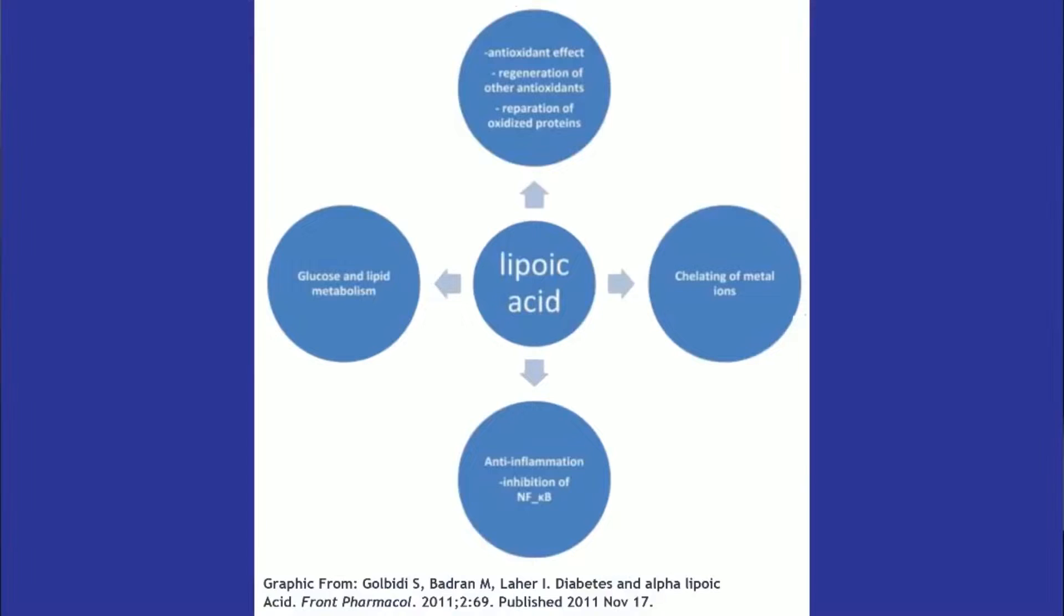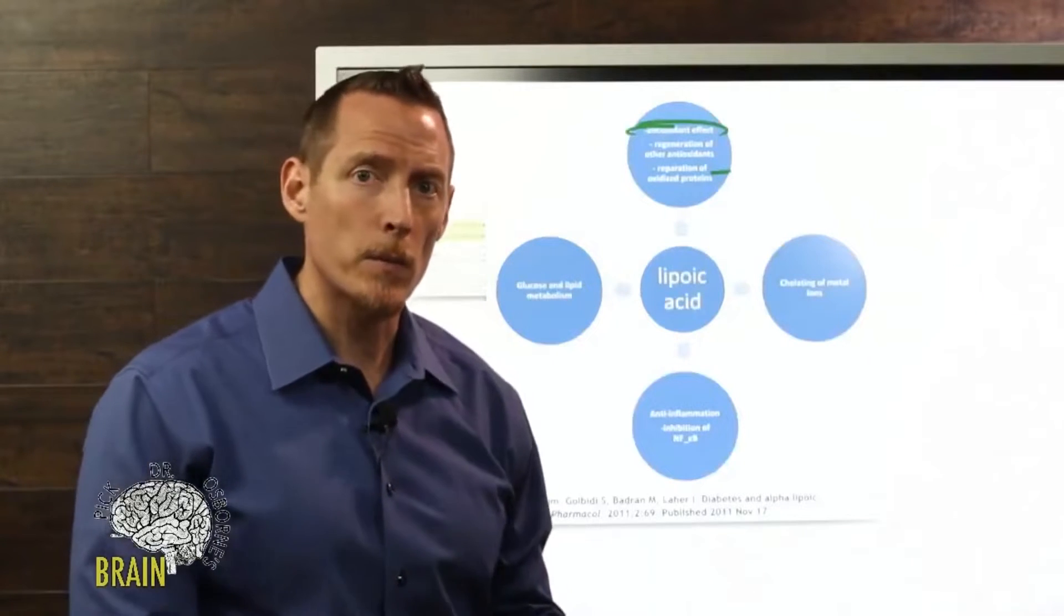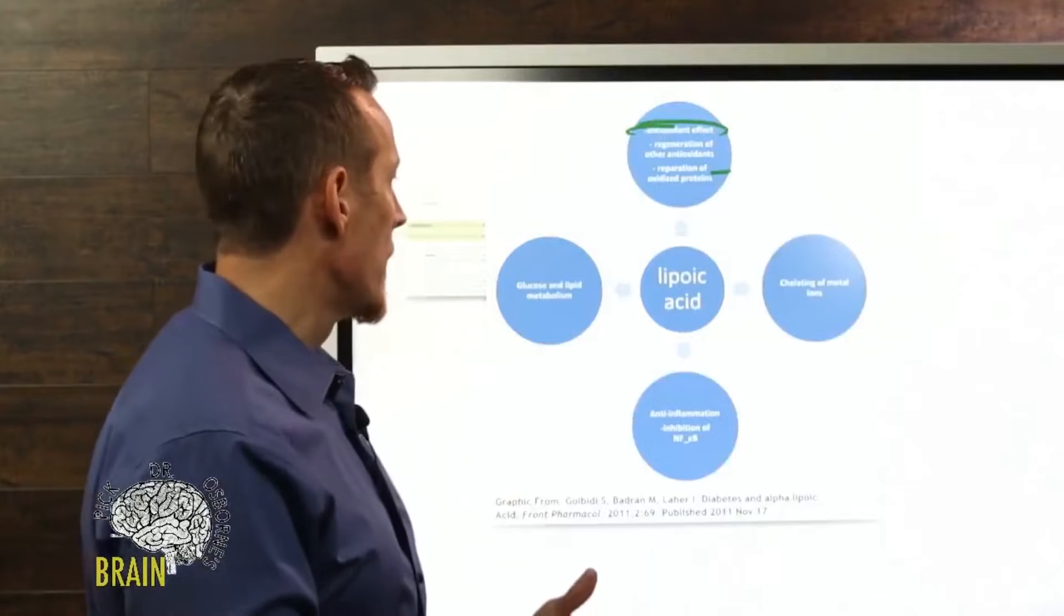Number one is an antioxidant effect. It acts as an antioxidant both fat and water soluble, preserves vitamin C and E, helps CoQ10 do its job, and regenerates glutathione. The second part is the regeneration of other antioxidants and the reparation of oxidized proteins, so it repairs damaged proteins in your body. These very important antioxidant functions make lipoic acid a very good friend for somebody with low antioxidant status.